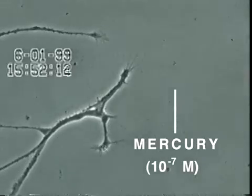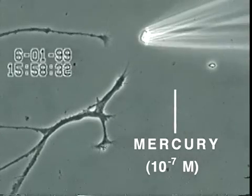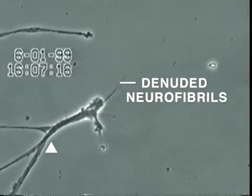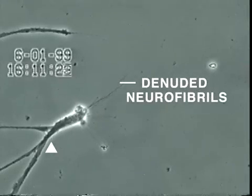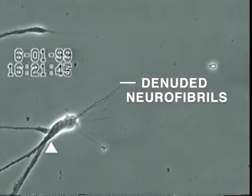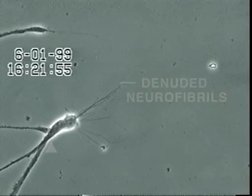Over the next 30 minutes, the neurite membrane underwent rapid degeneration, leaving behind the denuded neurofibrils seen here. In contrast, other heavy metals added at this same concentration, such as aluminum, lead, cadmium and manganese, did not produce this effect.